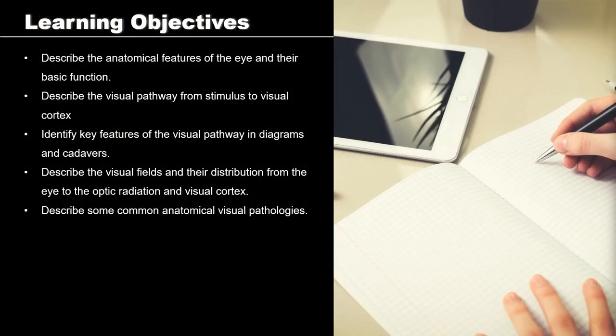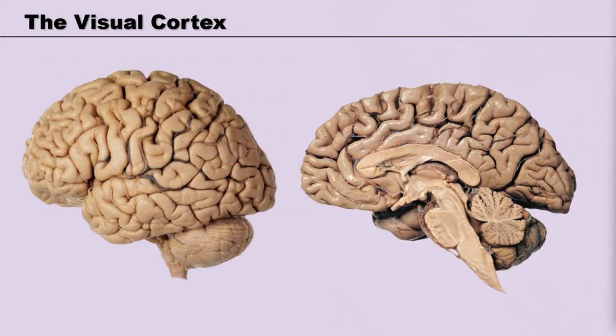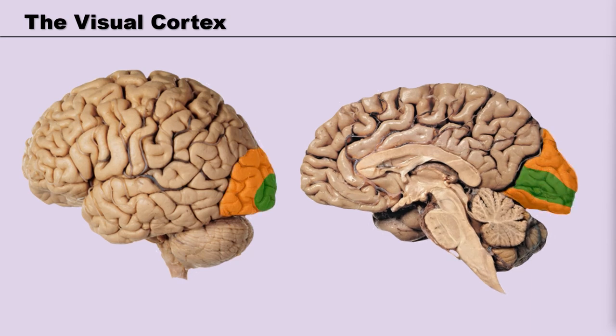So now let's have a look at the anatomy of the visual pathway. Ultimately, the visual pathway is going to end with the synapsing at the cortex. The visual cortex is located in the occipital lobe, with the occipital pole and the upper and lower banks of the calcarine sulcus being the primary projection area. For the purposes of this video, we will only be concentrating on the primary visual cortex and not the association area.